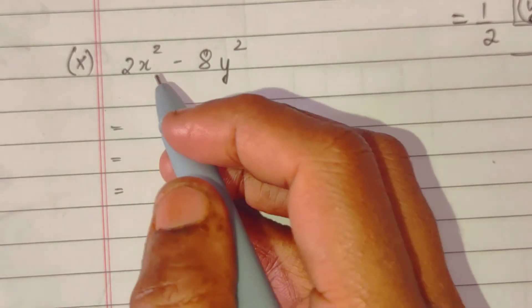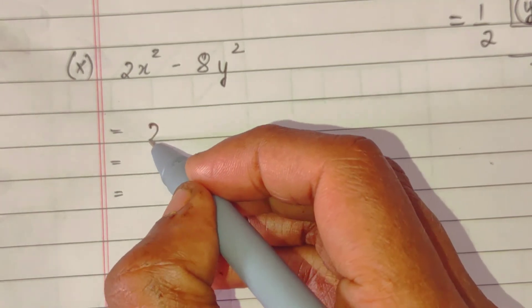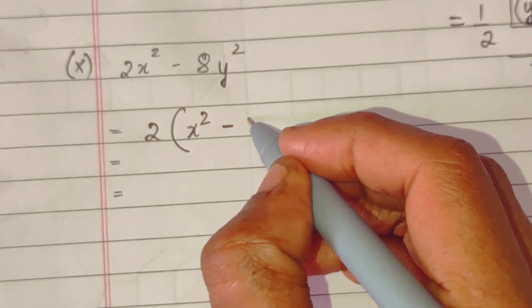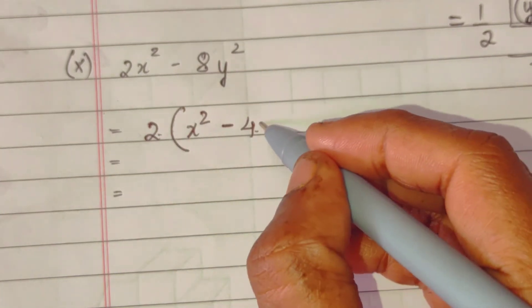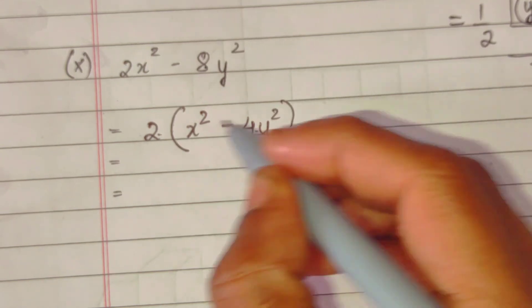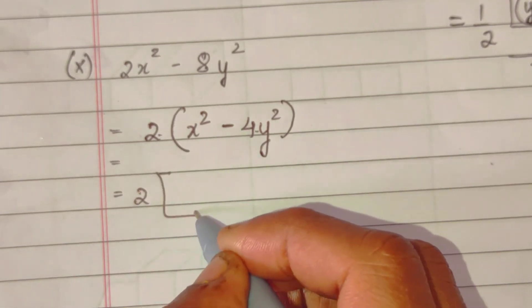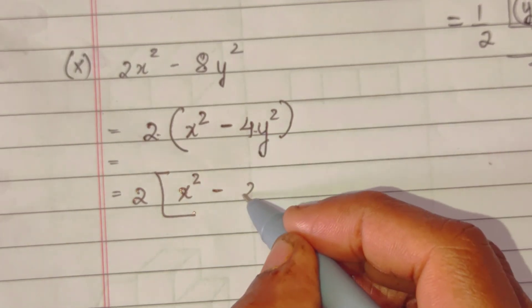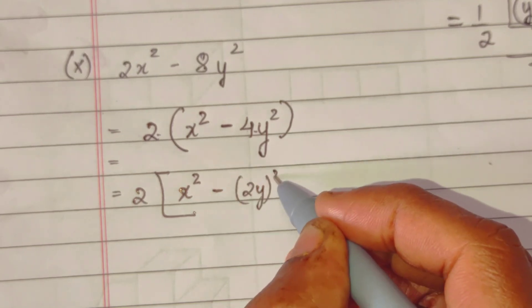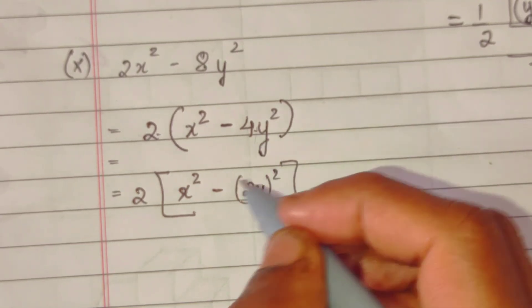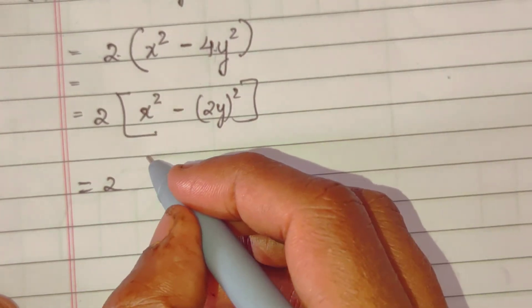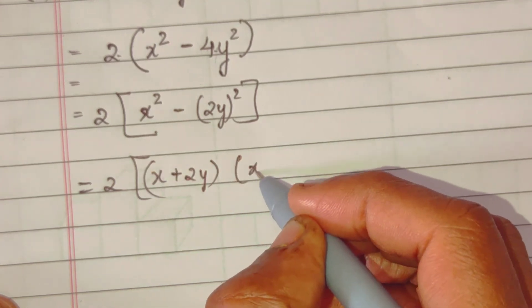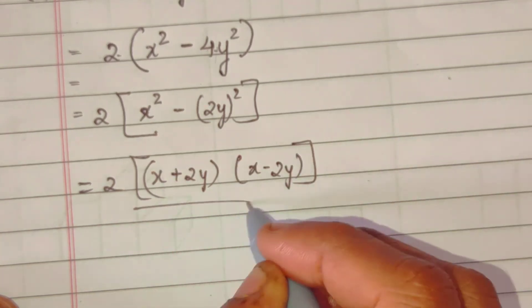Tenth sum, again we have to take common. 2 the whole bracket, x square minus 2 fours are 8. We will take this common. Now 2 times formula, x square minus 2 to the power 4. So final will be 2 times x plus 2y times x minus 2y. Okay.